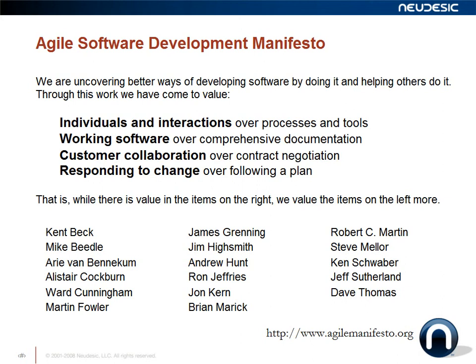The next value is customer collaboration over contract negotiation. In the waterfall world, your requirements document when signed off becomes the contract the business holds the team to. In agile projects, we focus more on collaboration throughout the entire life of the project, not just in the requirements phase. You'll have a list of initial features and functionality, and working with the customer and understanding their values over the life of the project, you'll collaborate to produce the product that provides the most value.